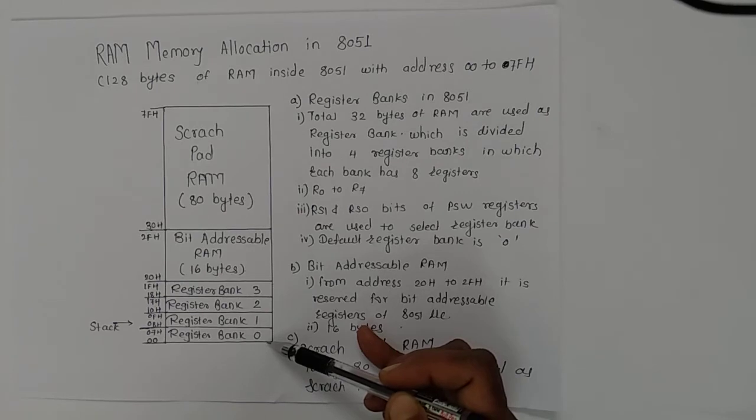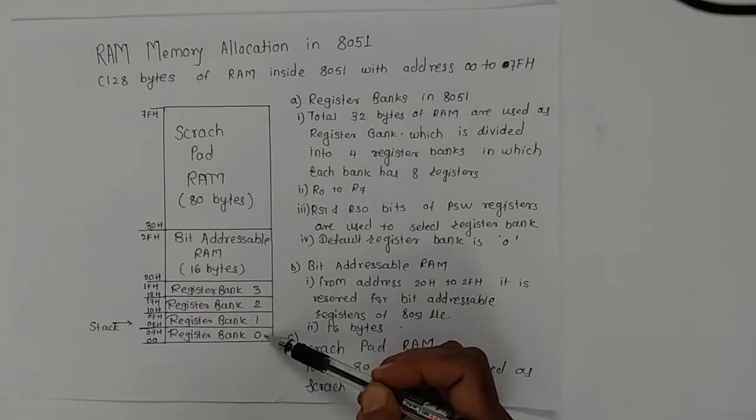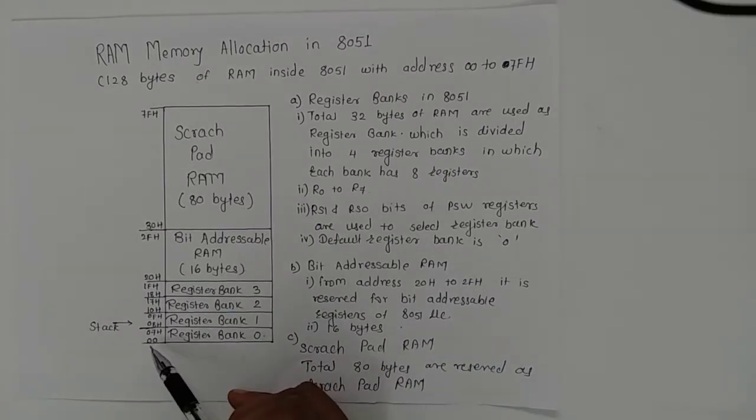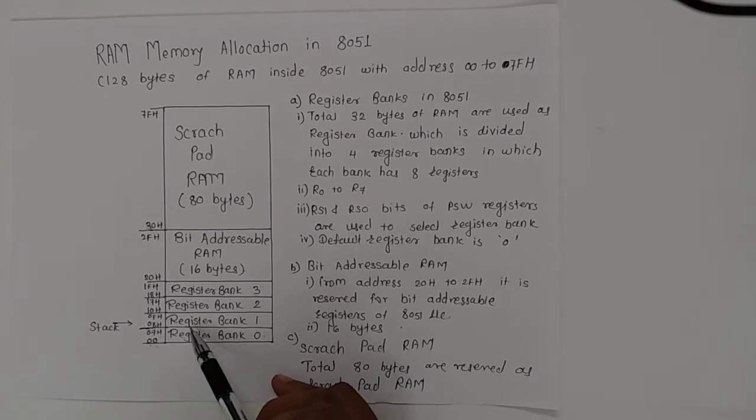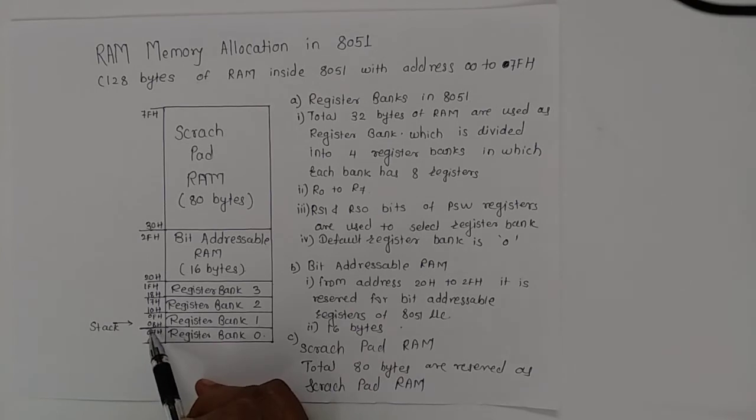This is divided into four banks: register bank 0 with address 00H to 07H, register bank 1 with address 08H to 0FH, register bank 2 with address 10H to 17H, and register bank 3 with address 18H to 1FH.